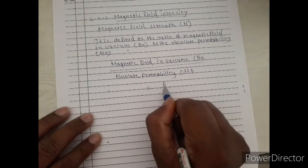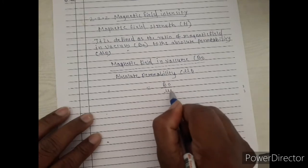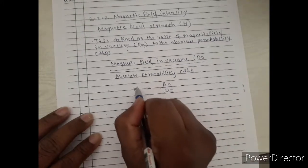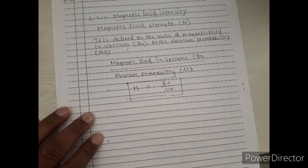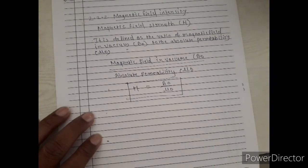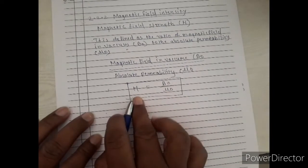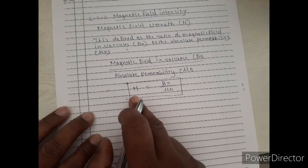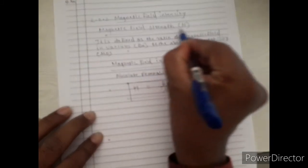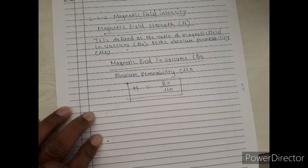In short, we can write H = B0 upon mu 0. So H is the ratio of B0 to mu 0. H is the magnetic field strength or magnetic field intensity.